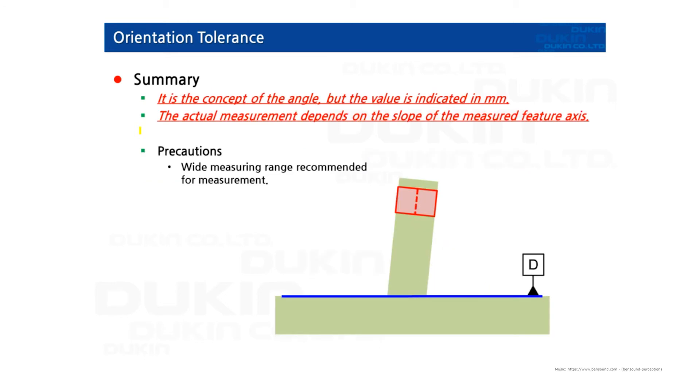Orientation tolerance is the concept of the angle—90 degrees, 180 degrees, or whatever the specified angle—but the value is indicated in millimeters. Remember that. The actual measurement depends on the slope of the measured feature axis, so we recommend a wide measuring range for the measurement.